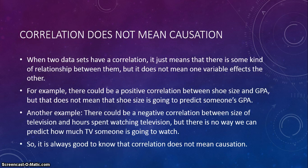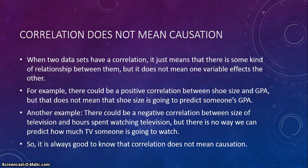One important takeaway — and you'll hear this in statistics — is that correlation does not mean causation. When two data sets have a correlation, it just means there's some kind of relationship between them, but it does not mean one variable affects the other. For example, there could be a positive correlation between shoe size and GPA, but that does not mean we can use shoe size to predict someone's GPA.